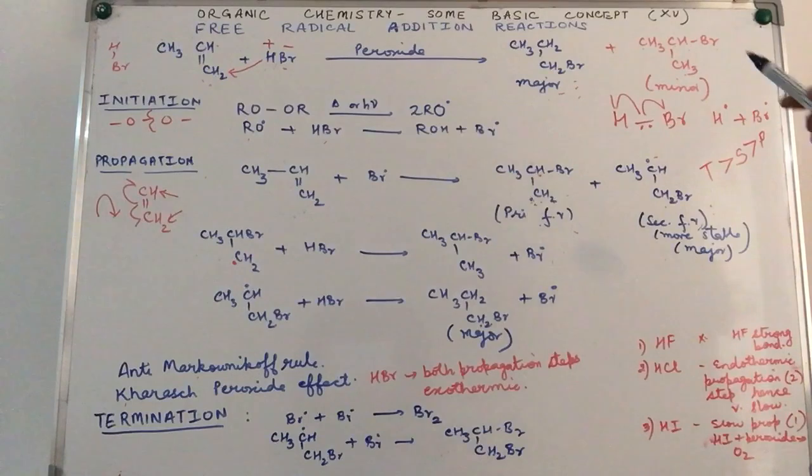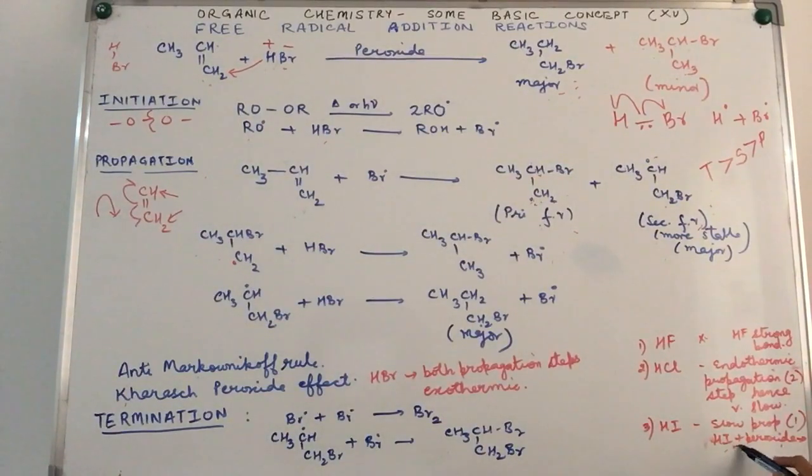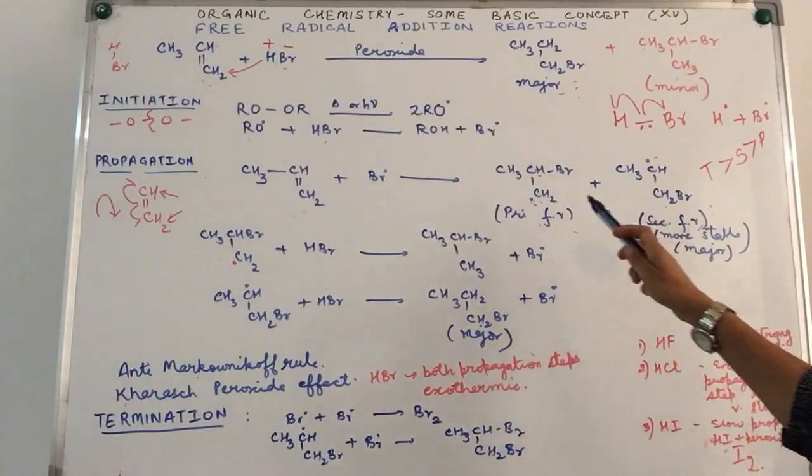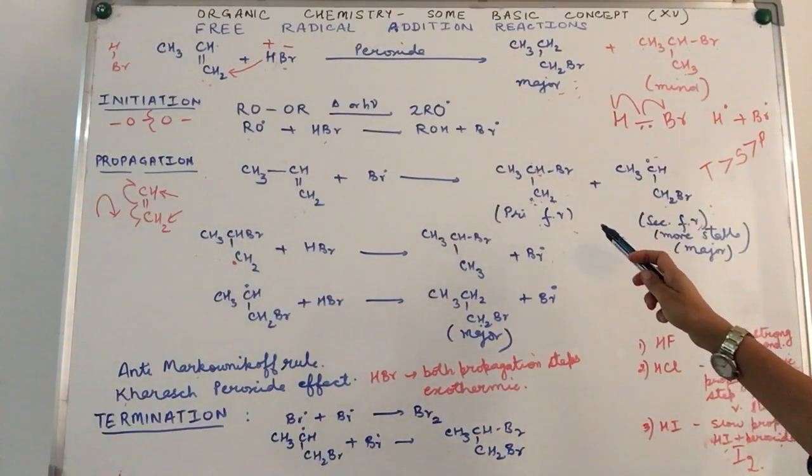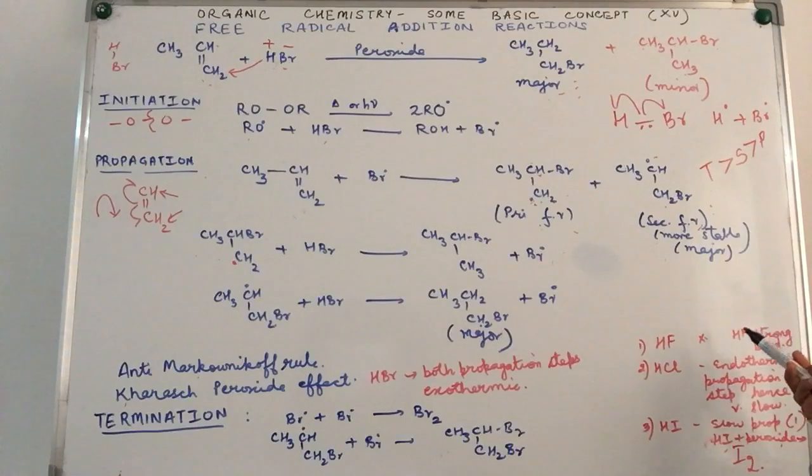In which case it is our Markovnikov rule which gets followed. In the case of HI, again here the bond is very weak, but at the same time what happens is because of the peroxide, the hydrogen iodide can get converted to iodine. And secondly, what will happen is the first process or the first step of propagation itself becomes very, very slow because of its weakness.